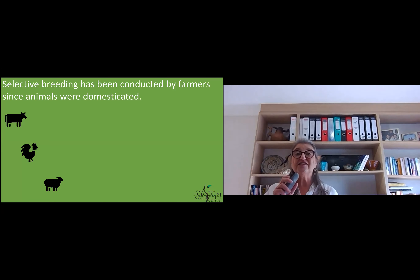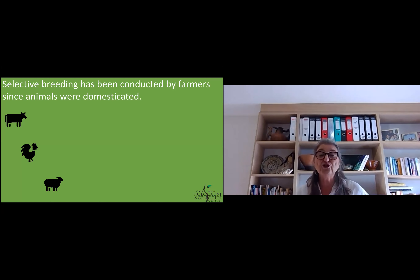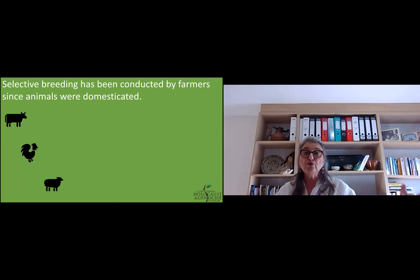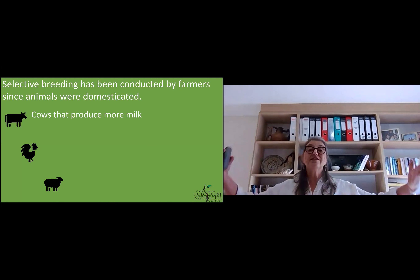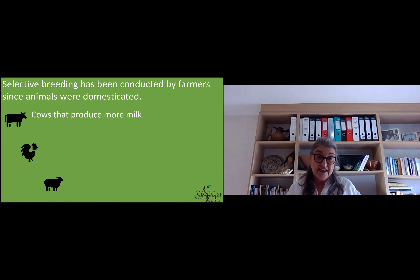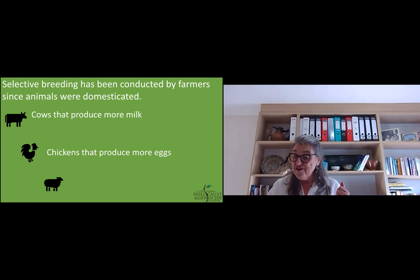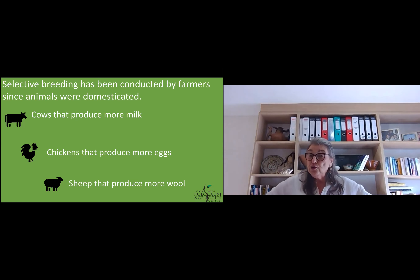Grade 11s, selective breeding is nothing new. Farmers have been doing selective breeding since animals were domesticated centuries and centuries ago. Farmers understood: you've got a cow that gives milk, and another cow that gives a lot of milk. If you breed the two good milkers, you're going to get a cow that produces even more milk. They realised the same with chickens — you could breed chickens that laid a lot of eggs to get chickens that laid very many eggs. They did that with sheep to produce more wool and better meat. So selective breeding is not new.